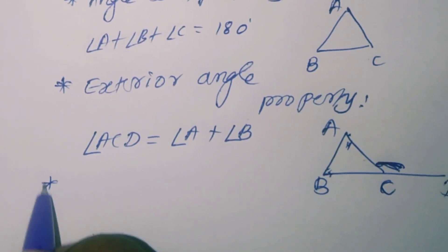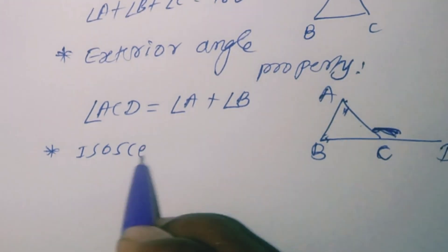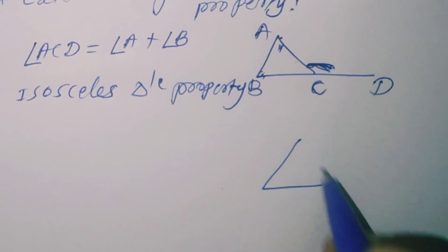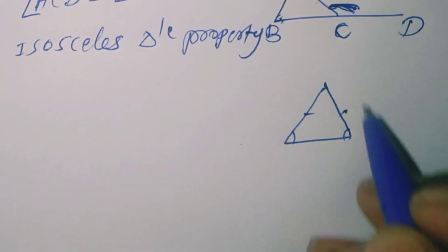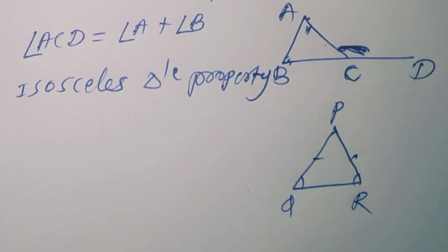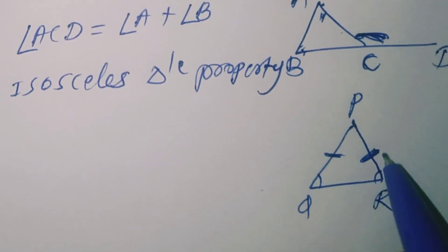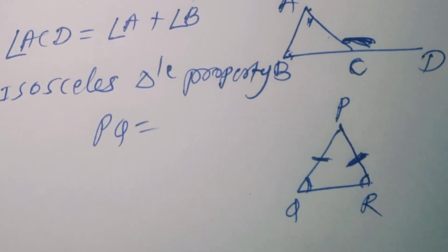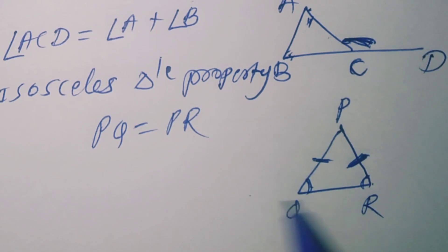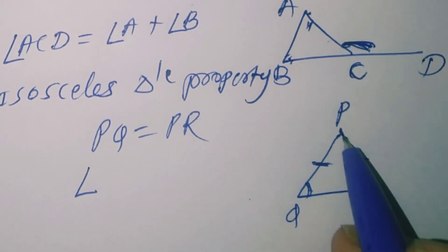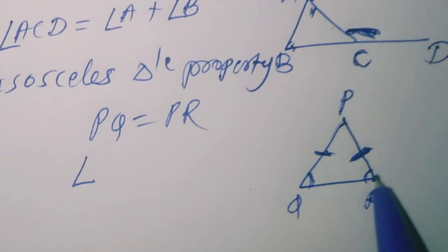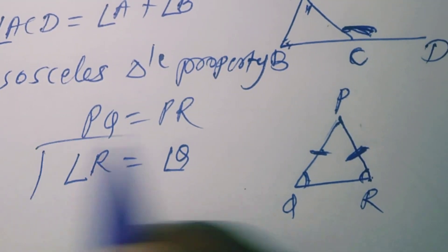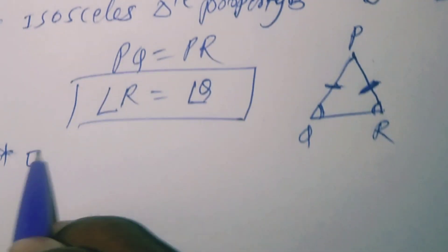Now, the isosceles triangle property. When two sides of a triangle are equal, it is called an isosceles triangle. In triangle PQR, if PQ equals PR, then the opposite angles are also equal — angle R equals angle Q. These two angles are equal. This is the isosceles triangle property.